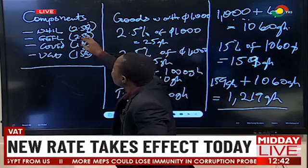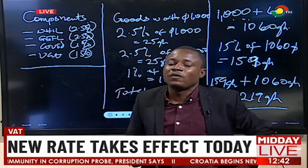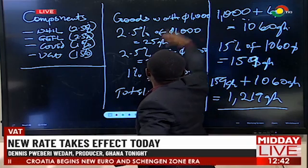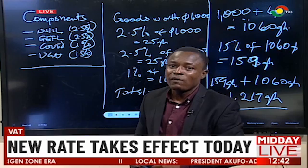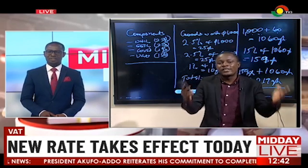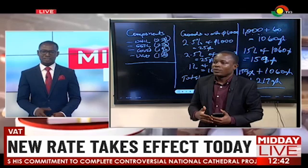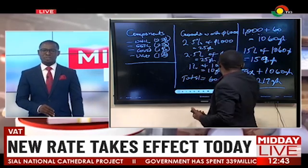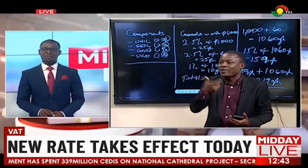So now you see that we had to add the NHIL, GetFund, and COVID levy before we apply the standard rates. A lot of people have made arguments that this is not a true reflection of what the tax should be, because when you look at it, it's like you are taxing on tax. The minority, for instance, have made that argument, and quite recently the MP for Navarongo Central also made that same argument — and you can understand because in his previous life he was a tax man. So essentially, if we were just going to apply the flat 21%, it would have given us just 1,210 cedis. The excess of 9 cedis is the argument that people make that it is not a true reflection of the tax component.